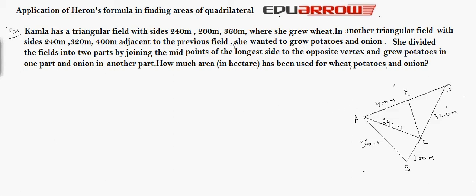We have both the triangles are adjacent to each other with the size 240 meters. Now ABC is the field where wheat is grown and ACD is the field where potatoes and onions are to be grown and is divided into two parts by CE. So in one field, potatoes are grown and in another field, onions are grown.